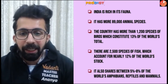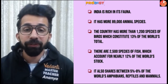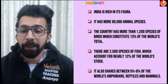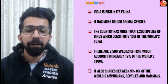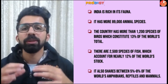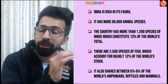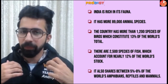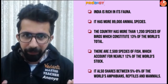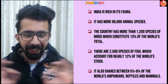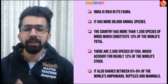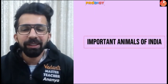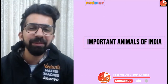Remember these numbers — they are very important. There are nearly 2,500 species of fish, which account for nearly 12% of the world's total stock. India also shares between 5 to 8% of the world's amphibians, reptiles, and mammals. Amphibians are animals that live on both land and water, while mammals are animals that give birth to live babies and do not lay eggs.